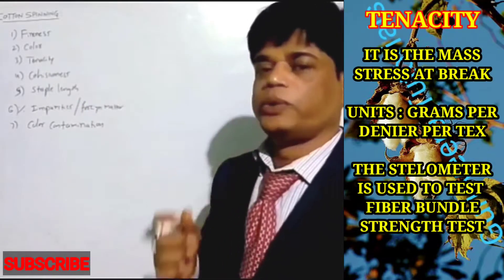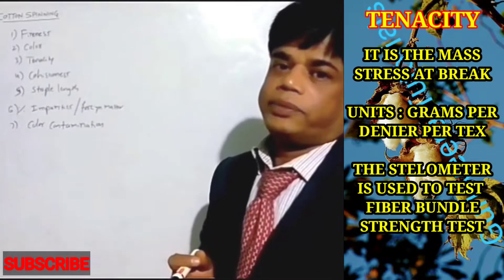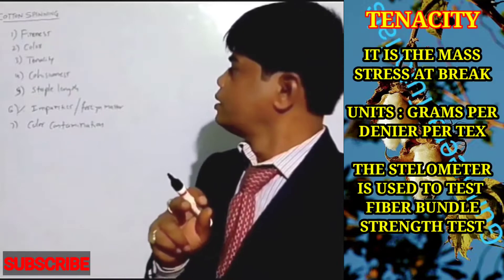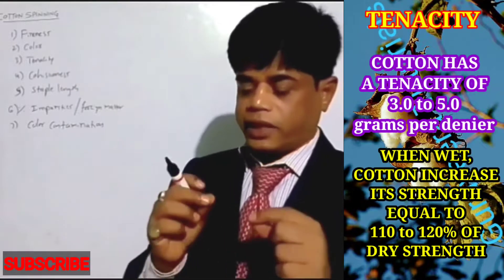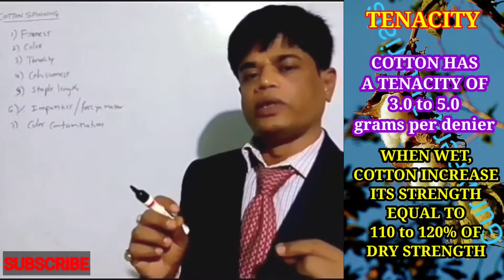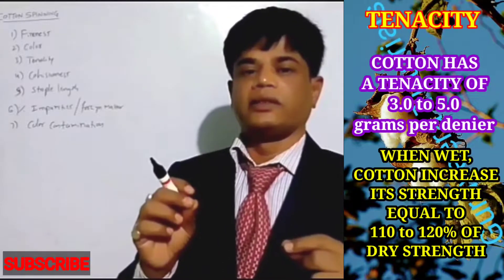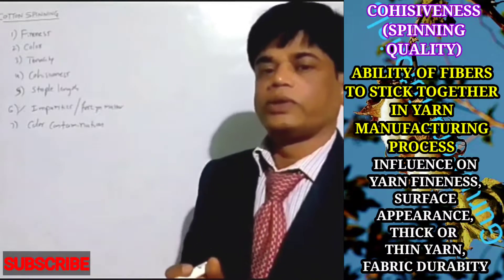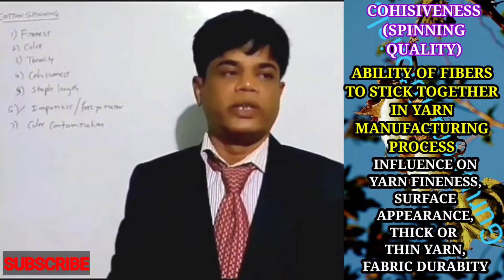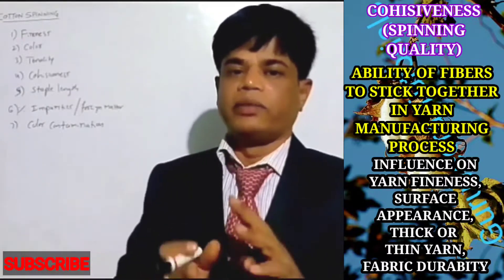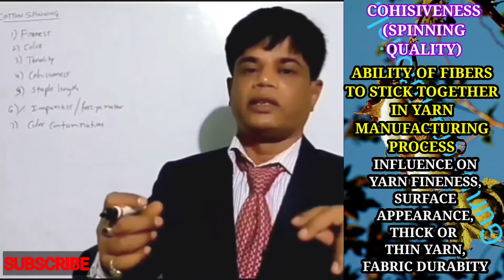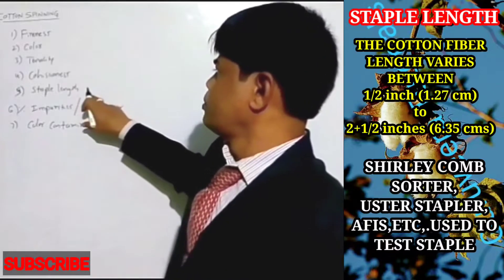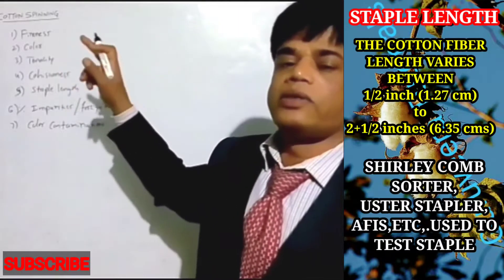Tenacity refers to the strength of the fiber. The strength should be good — around 1.5 — because stronger fiber produces stronger yarn. Cohesiveness is the property of the fiber that allows it, while twisting and spinning, to stick together and twist together, giving strength to the yarn. Staple length and fineness together depend on what counts are going to be produced.